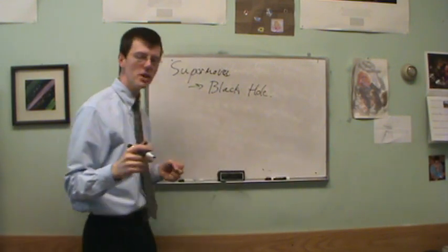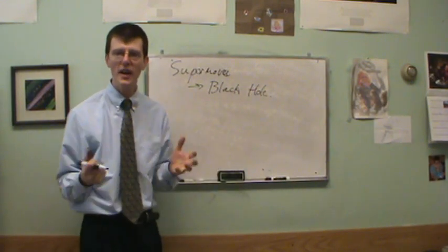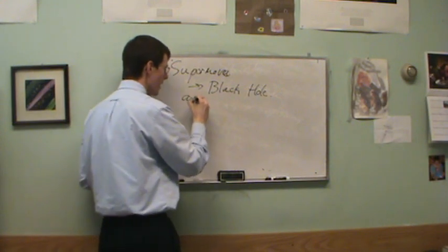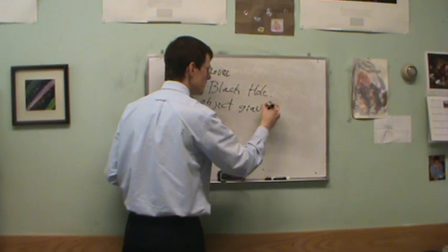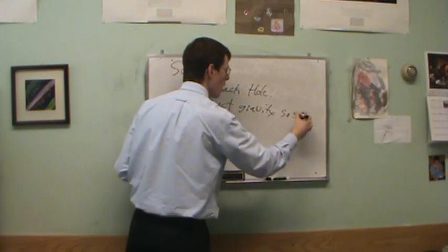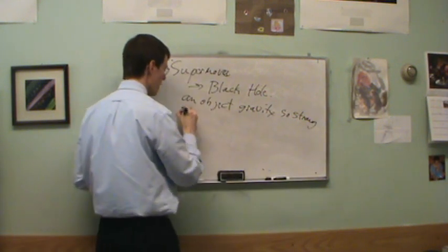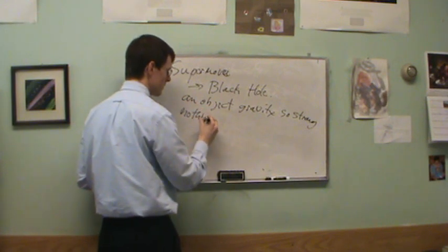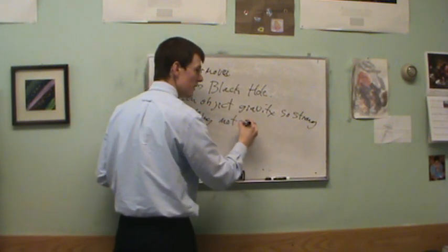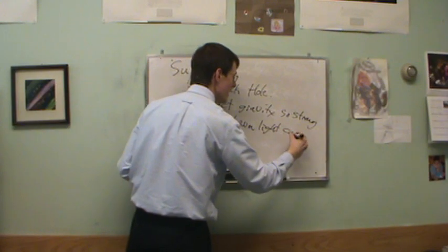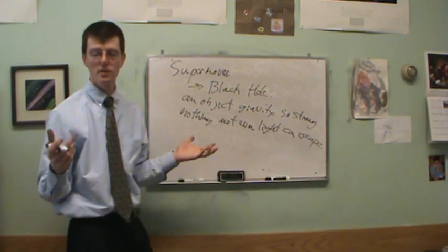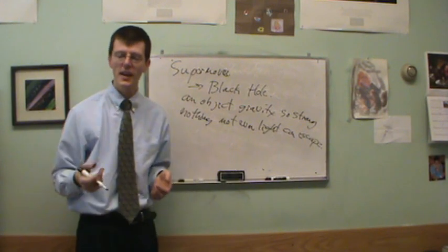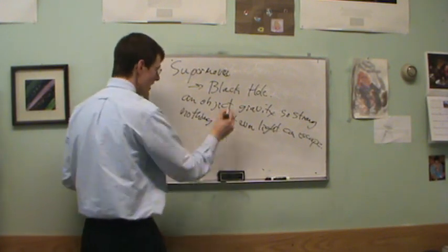A black hole is an object with gravity so strong that nothing, not even light, can escape. An object with gravity so strong that nothing, not even light, can escape. Light is the fastest speed in the universe, so if you can't go the speed of light, well then nothing can ever escape from it.